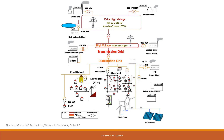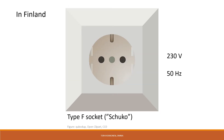Very high voltages are used for long-distance transmission. This reduces the losses produced by heavy current. An electrical substation decreases the voltage of incoming electricity to local lower voltage distribution. Homes in Finland are wired with 230-volt alternating current circuits. The frequency of alternating current is 50 hertz, meaning the current changes 50 times per second back and forth, and the voltage passes through zero to its maximum absolute value 100 times per second.